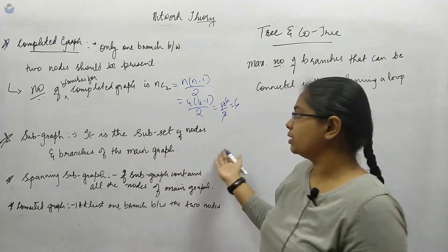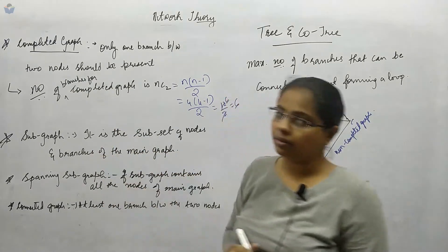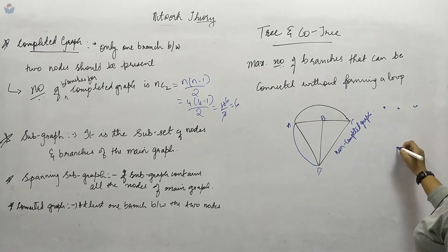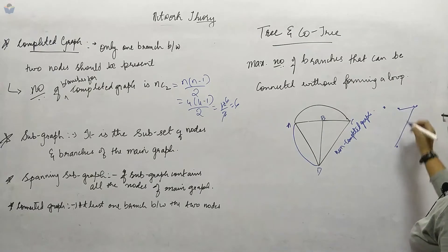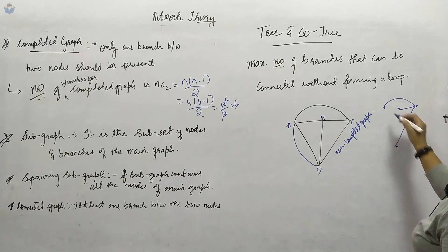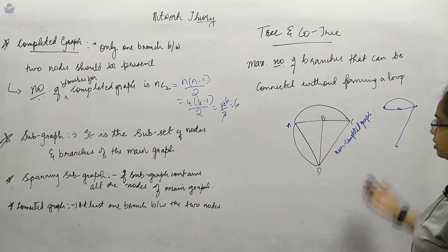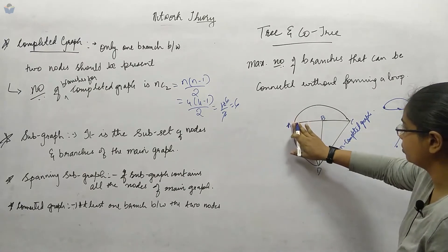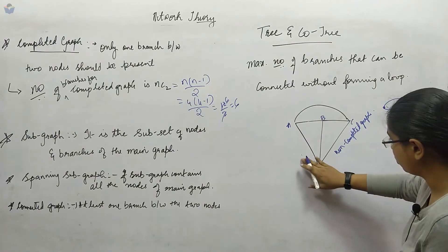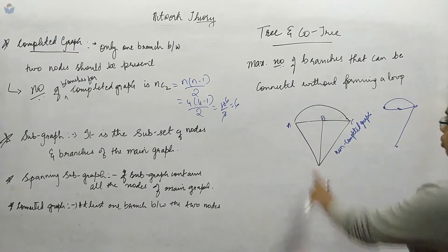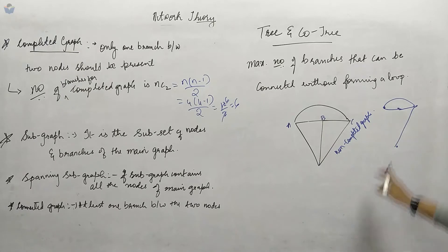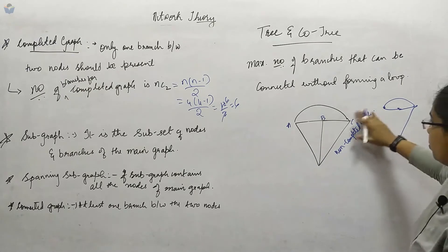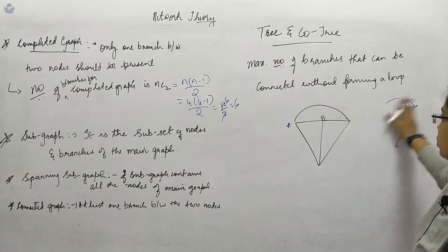Next is a subgraph — it is nothing but a subset of nodes and branches of the main graph. You can draw it in different ways. It is a subset of the main graph and has branches and nodes of the main graph. It can form a loop or it cannot form a loop — that is not a problem.